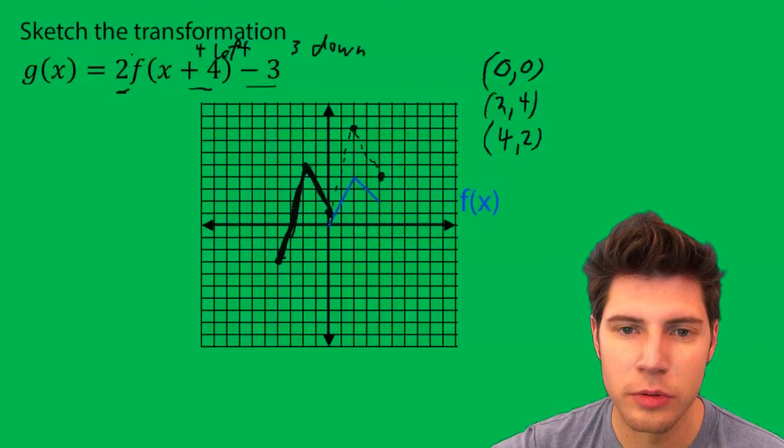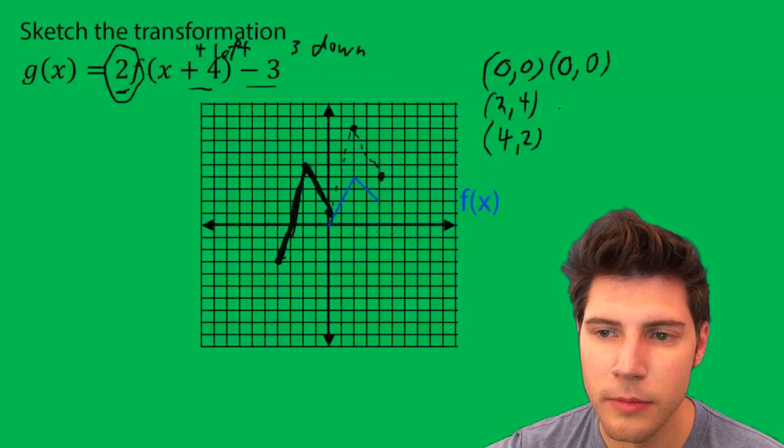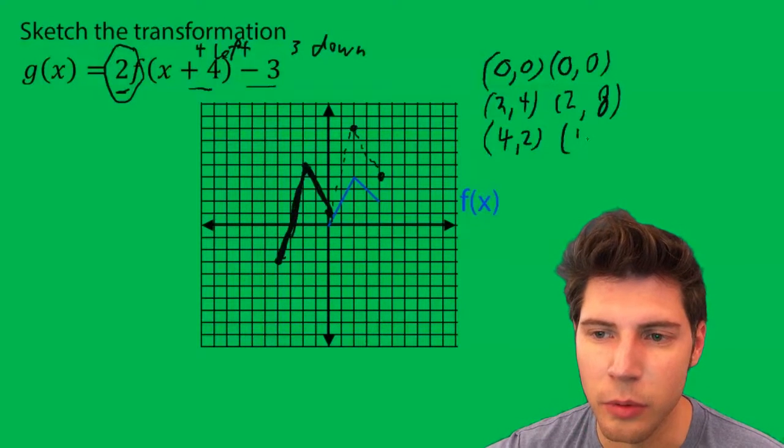So the 2, we're going to multiply all the y by 2. So we get 0, 0, 2, 8, and 4, 4.